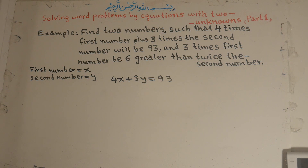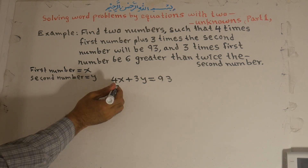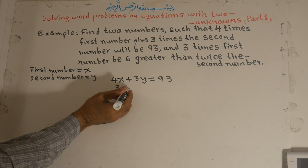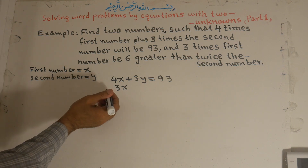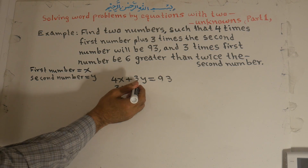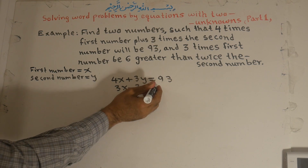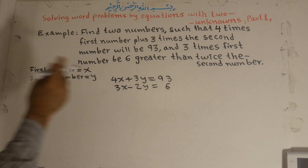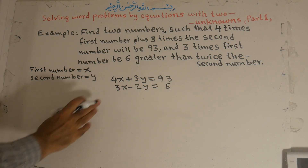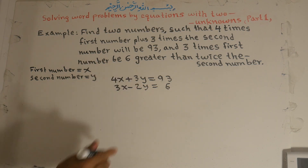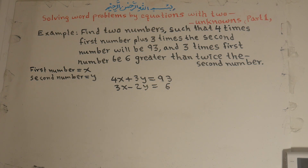This is the first equation. Because there are two unknowns, we must have two equations. The second condition: three times the first number is six greater than twice the second number. That means if you subtract two times Y from three times X, the result will be six. So: 4x + 3y = 93 and 3x − 2y = 6.